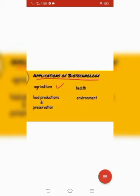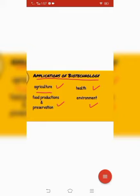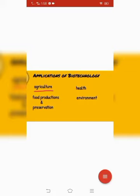The major areas in which biotechnology techniques are applied include agriculture, food production and preservation, health, and environment. These are the four major areas. Firstly, we will discuss how techniques of biotechnology have improved agriculture.